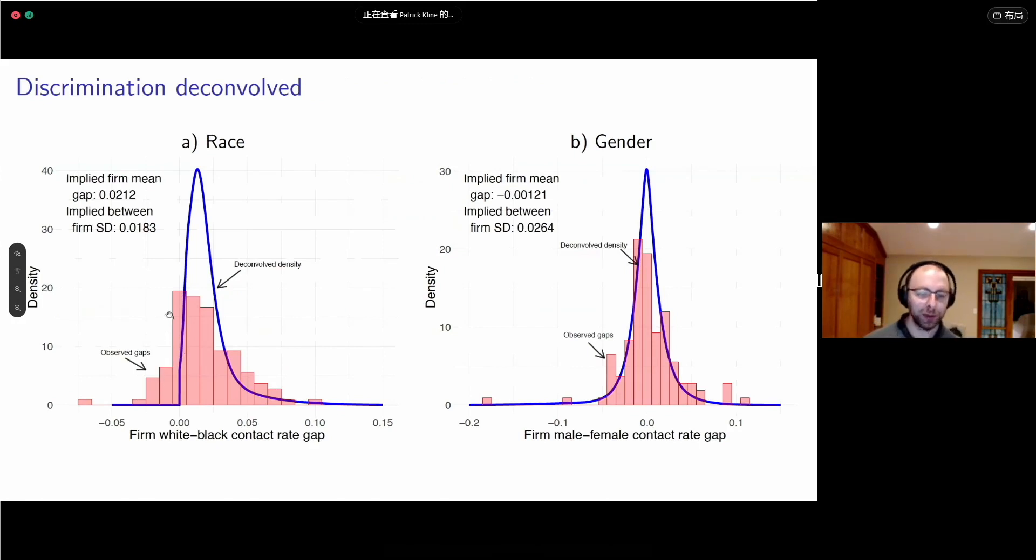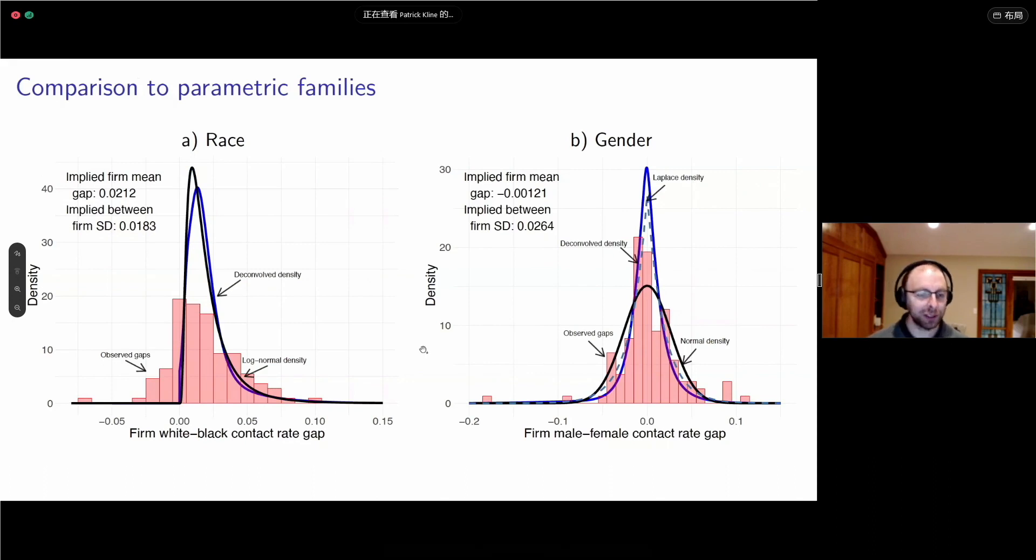In this picture, this histogram is showing you a histogram of the noisy contact gaps. The deconvolved density is what our penalized maximum likelihood procedure recovers as the signal density after you've accounted for the measurement errors. You can see it's not allowing any discrimination against whites. What are we seeing here? We see that many firms have very slight levels of bias against black names, but then there's this tail off here of heavy discriminators. For gender, things are almost perfectly centered around zero, consistent with having found mean effect of zero. But there are these tails of discrimination in both directions. For race, you've got something that looks a lot like a log-normal. For gender, it's so peaked, it's even more peaked than a Laplace density.